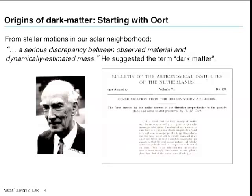Let me talk about the origins of the dark matter problem. I'll start with Oort. Oort was one of these guys using nascent observational tools of Doppler spectroscopy. He looked at certain classes of stars in our neighborhood and knew crudely that our galaxy was a disk. He knew how those nearby stars should move in and out of the disk, probing the potential. Oort was troubled when he looked at the motions of stars out of our disk in 1932 — he didn't see a disk potential. He said there's a serious discrepancy between the observed material and dynamically estimated mass, and he flat out used the term dark matter.